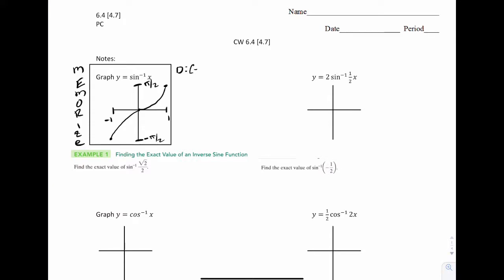The domain, as we can see, is -1 to 1. The range is -π/2 to π/2. Okay, so that's our basic graph.